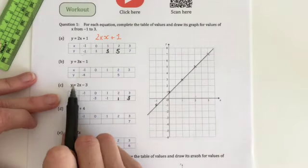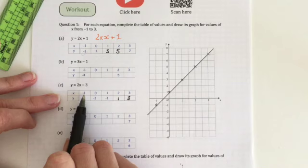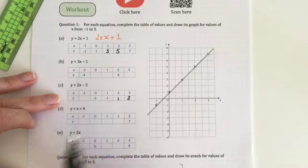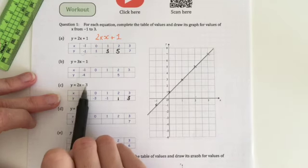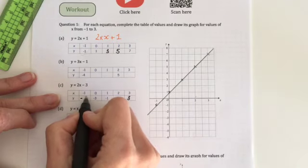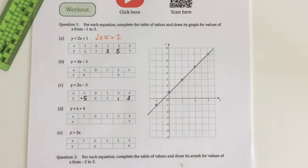2 times negative 1 is negative 2, and I need to take 3 away. So I end up going further down the number line, so it's negative 5.